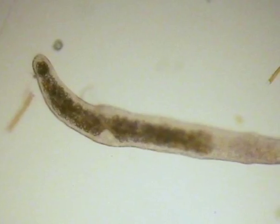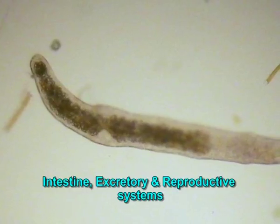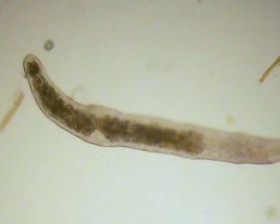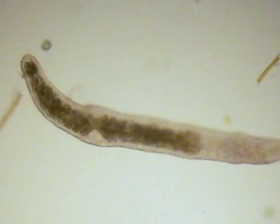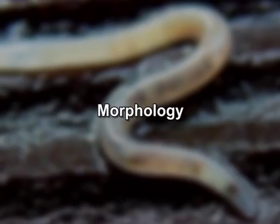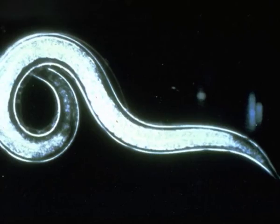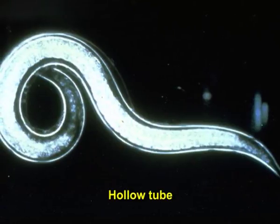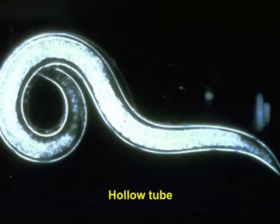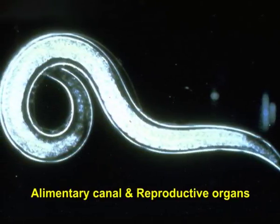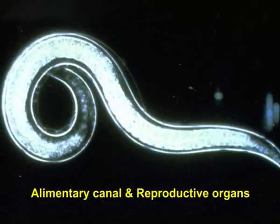The regions of the intestine, excretory, and reproductive system show a tendency towards asymmetry. Regarding morphology, nematodes are essentially a long hollow tube within which are another tube — the alimentary canal — and the reproductive organs.